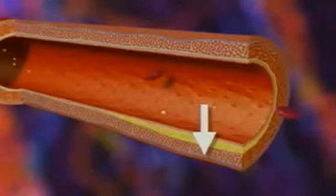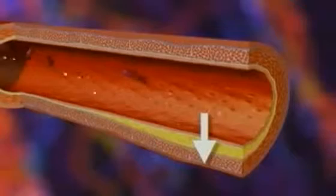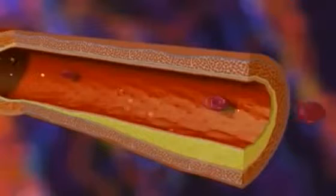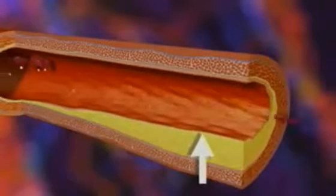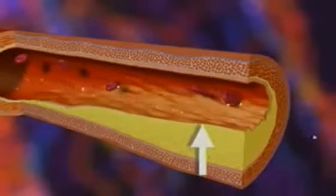For this reason, angiography, which visualizes only those plaques that encroach upon the lumen, under-represents the extent of atherosclerosis. However, as the burden of plaque increases, the artery can no longer compensate by expanding outward, and the plaque begins to protrude into the lumen. This generally occurs when plaque involvement reaches about 40 percent of the vessel circumference.